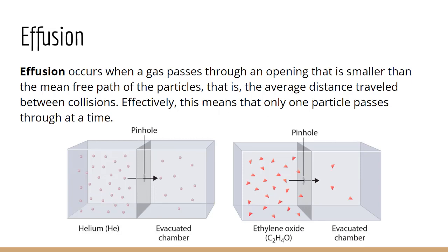Effusion is when you have a gas passing through a small opening. Now, typically we talk about gas particles moving along what's called the mean free path. That's just how far they can go before they hit something. The more particles there are, obviously, the shorter the mean free path. Effusion happens when a gas passes through a hole, a small opening, that's smaller than that average distance that they can travel. So in other words, they have to hit that opening perfectly to get through it. The idea is that typically that means one particle is going through at a time.